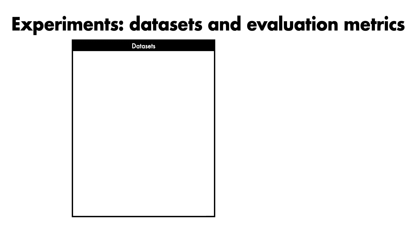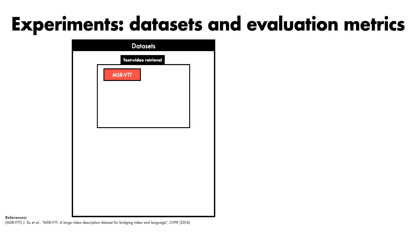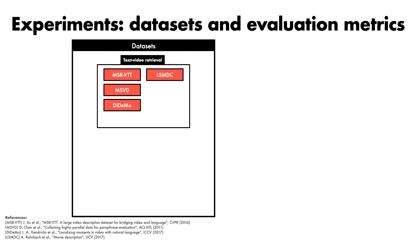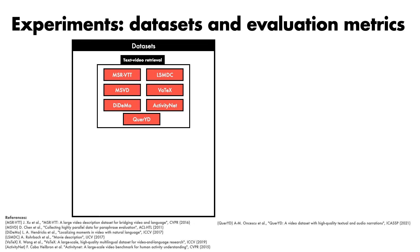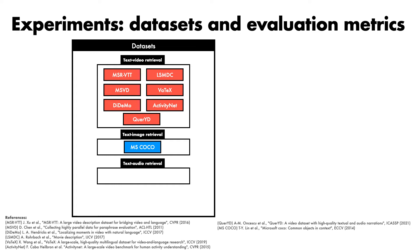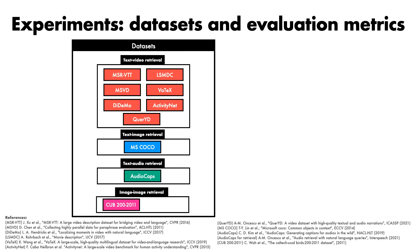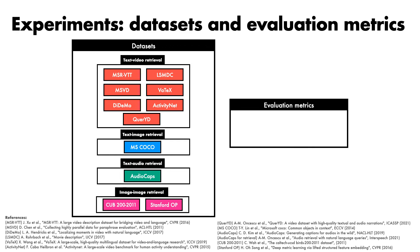Next, we come to experiments. We'll first describe the datasets used in this work to assess the value of QB norm for cross-modal retrieval. For text-video retrieval, experiments are conducted on MSRVTT, MSVD, Didymo, LSMDC, Vatex, ActivityNet, and QueryD. For text-image retrieval, MSCoco is used. For text-audio retrieval, we use AudioCaps. And finally, we also explore retrieval within the same modality for the case of image-to-image retrieval on CUB 200-2011 and Stanford Online Products. To evaluate performance, we use recall at k, where higher is better, and median rank, where lower is better.